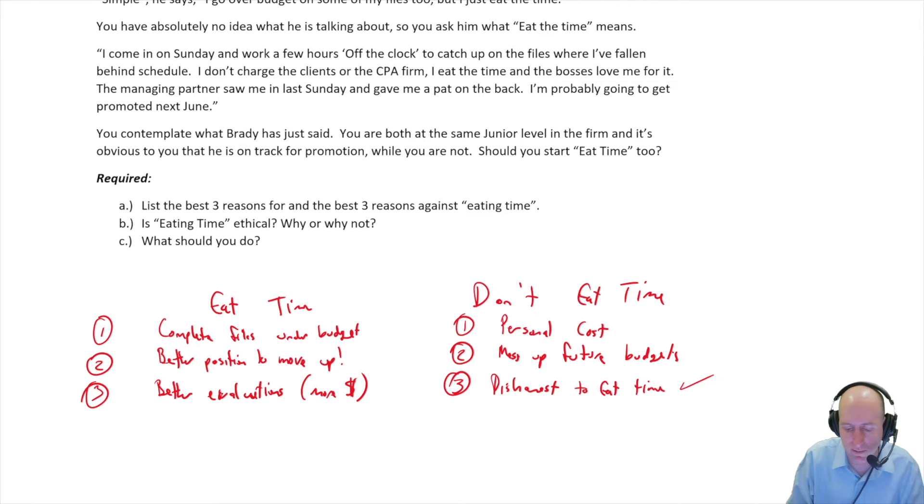So I think that's the best argument for. I am more convinced by the arguments against and the biggest one being it's dishonest behavior. And it has these knock on effects where if you get the file next year, you did it in four fake hours this year, they're going to expect you to do it in four fake hours next year. And I think a big piece of being a CPA and making it in this business is integrity. And I do think that as soon as you start telling lies, even if you think they're white lies that are positive, you're on the wrong track. So that's my own opinion.